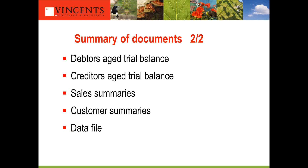Other documents available from the accounting system include things like debtors' aged trial balances. The accounting documents you can get out of the accounting system are not restricted to just a profit and loss statement and a balance sheet. A debtors' aged trial balance lists who owes you money and how long the debt has been outstanding. Similarly for creditors. When doing a valuation, if the debtors' aged trial balance shows all debtors are out to 120 days, you have to question whether the debtors' balance is even a legitimate asset or should be written off for non-recovery.